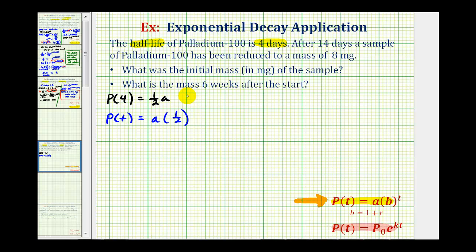Notice how when t is equal to four, we would have one-half times a to the first, which is equal to one-half a, which has to be true based upon the half-life. Which means we can use this exponential function to model the decay of palladium-100.